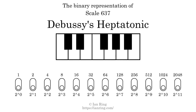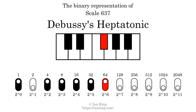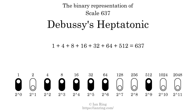The binary representation of this scale is determined by mapping tones of the scale to binary digits. Each binary digit represents a power of 2. To get the scale number, we add the powers of 2 together. The powers of 2 that are present in the scale, all added together, equals 637.